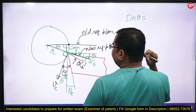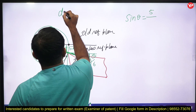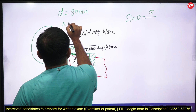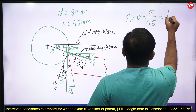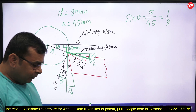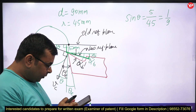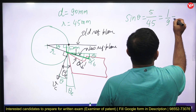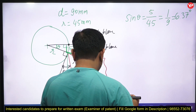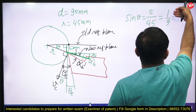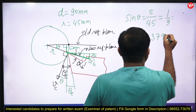We calculate sine theta as perpendicular over hypotenuse. The diameter of the workpiece is 90 mm, so the radius is 45 mm. Therefore, sine theta equals 5 divided by 45, which is 1/9. Calculating this angle, we get theta equal to 6.379 degrees.